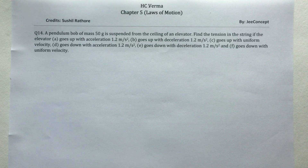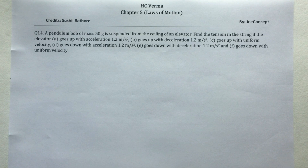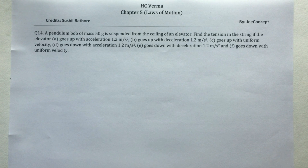Hello friends, this is a solution video for question number 14, chapter 5, H.C. Varma. The problem statement says: a pendulum bob of mass 50 gram is suspended from the ceiling of an elevator. Find the tension in the string if the elevator A goes up with acceleration 1.2 m/s², B goes up with deceleration 1.2 m/s², C goes up with uniform velocity, D goes down with acceleration 1.2 m/s², E goes down with deceleration 1.2 m/s², and F goes down with uniform velocity.